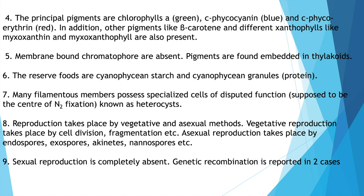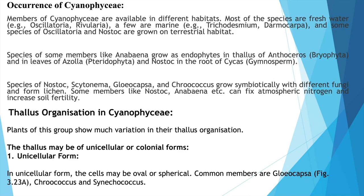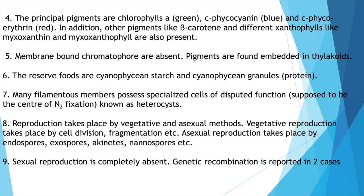In addition, beta-carotene and xanthophylls like myxoxanthin and myxoxanthophyll are also present. Membrane-bound chromatophores are absent. Pigments are found embedded in the thylakoids. The reserved foods are cyanophysean starch and cyanophysean granules. Many filamentous members possess specialized cells of disputed function, supposed to be centers of nitrogen fixation, known as heterocysts. Reproduction takes place by vegetative and asexual methods, as sexual reproduction is absent. Genetic recombination has been reported in two cases.